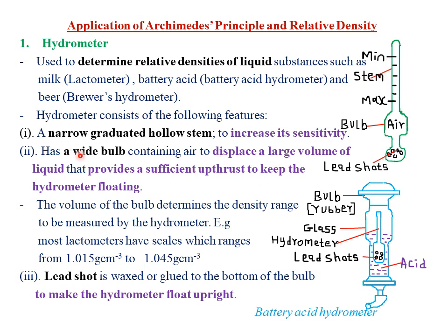The hydrometer also has a wide bulb. Why should the bulb be wide? It has a wide bulb containing air to displace a large volume of the liquid. So the reason why the bulb should be wide is to displace a large volume of the liquid.